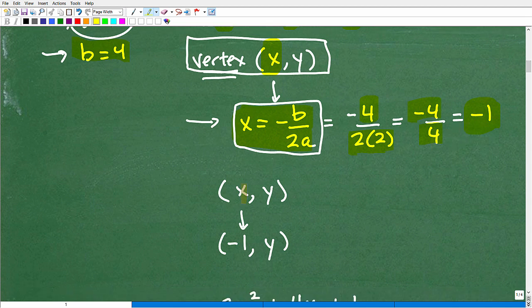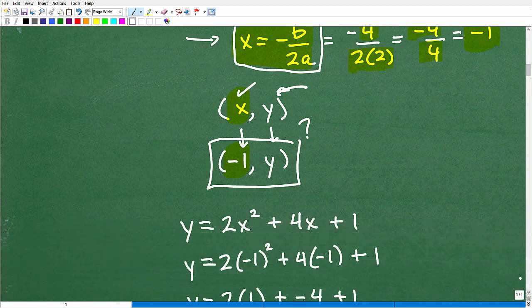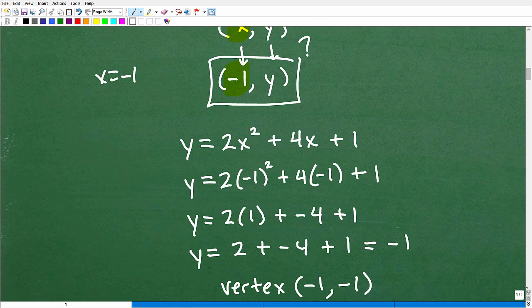So right there, it's going to be negative 1. So that just means that all we have to do here is find the Y coordinate, and we will have the vertex. So we're halfway there right now. We found the X, and now we need to go find the Y. So how do we find the Y? Well, first, you need to find the X. So once you have the X, and we know that X is negative 1, all we need to do is plug in that X value you just found into the equation.